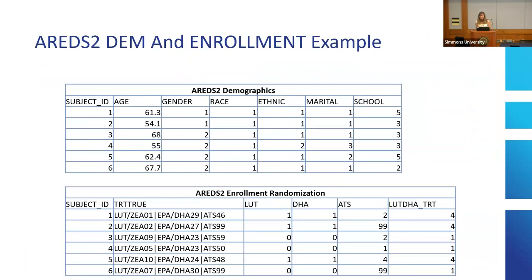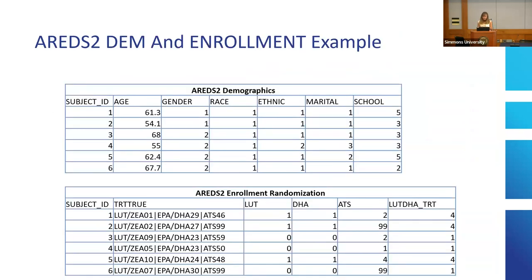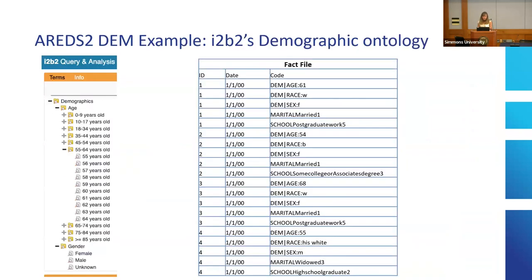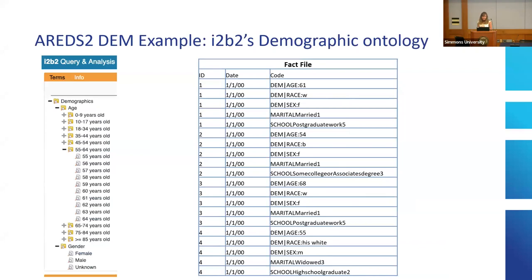However, most of the other datasets in dbGaP look more like regular tables — you have a patient and then all the information is in the columns, not one per row. There's also an enrollment/randomization file showing how patients were enrolled in a particular treatment. For those, as you can see with the demographics example, we had to convert and map to the database — gender, race, and so on — using our little scripts.